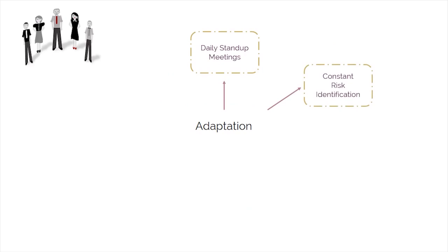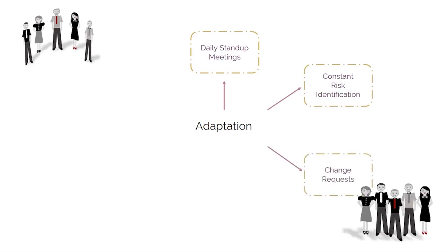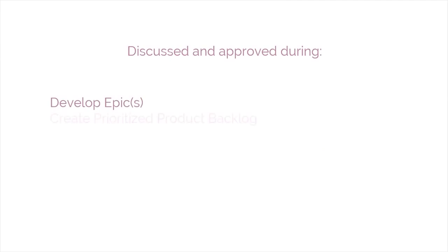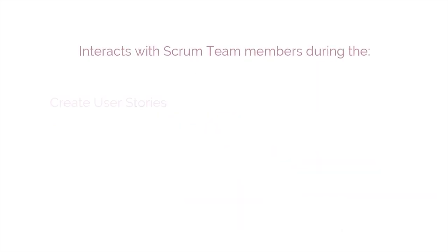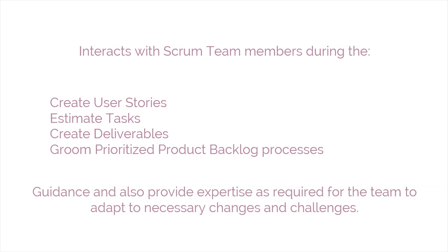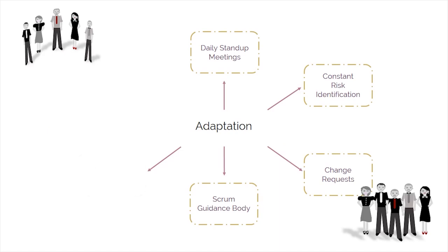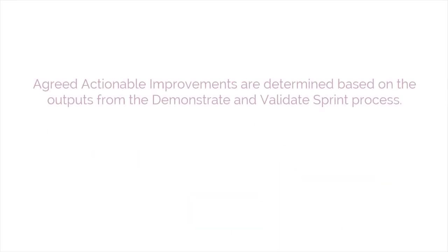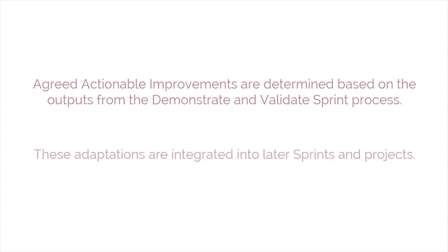Identified risks become inputs to several Scrum processes. Improvements can also result in change requests, which are discussed and approved during the develop epics and create prioritized product backlog processes. The Scrum guidance body interacts with Scrum team members during the create user stories, estimate tasks, and create deliverables processes to offer guidance and provide expertise, helping the team adapt to necessary changes and challenges. In the retrospect sprint process, agreed actionable improvements are determined based on outputs from the demonstrate and validate sprint process, and these adaptations are integrated into later sprints and projects.